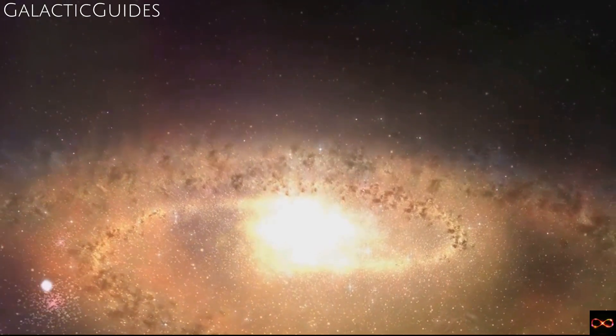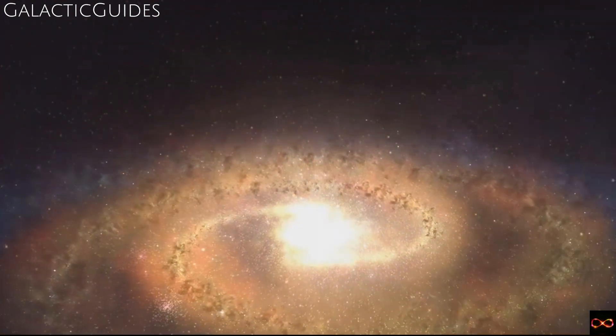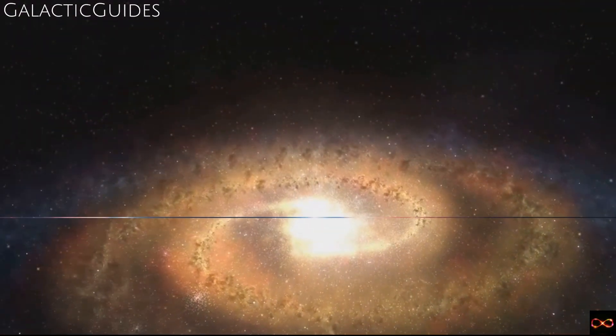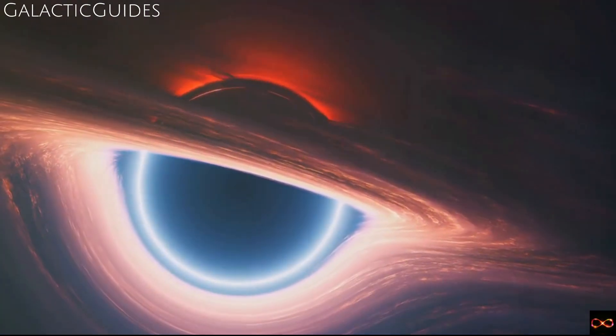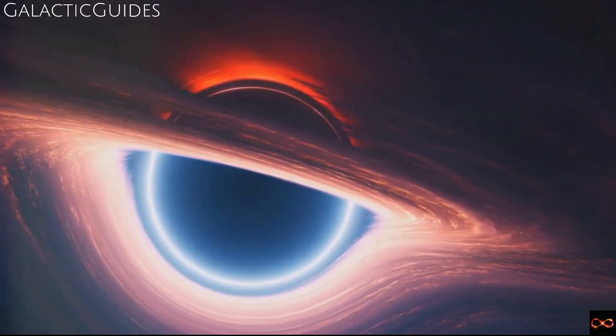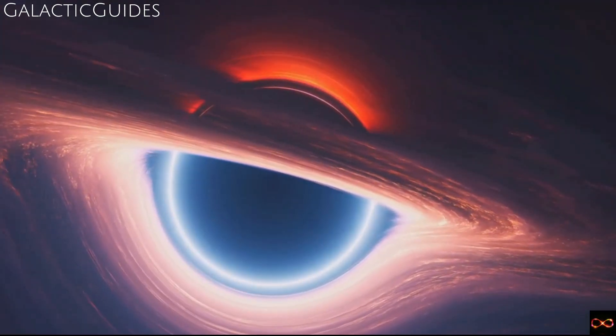Every star you see is a potential black hole in the making. And as strange as it may seem, it's the death of a star that gives birth to a black hole. Now that we know how a black hole comes to life, what's inside one? Let's talk about the two main components of a black hole, the event horizon and the singularity.